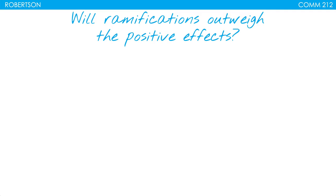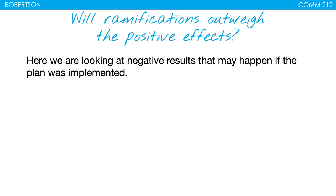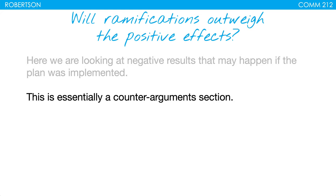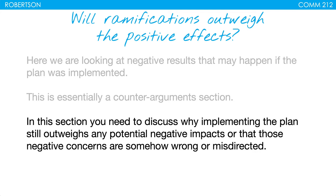Will ramifications outweigh the positive effects? Here we're looking at negative results that may happen if the plan is implemented. Is there something negative that comes along with the plan, and is it still worth it? This is essentially a counter-argument section. Does part of the plan trigger some other really negative thing? In this section, you need to discuss why implementing the plan still outweighs any potential negative impacts, or that those negative concerns are somehow wrong or misdirected.